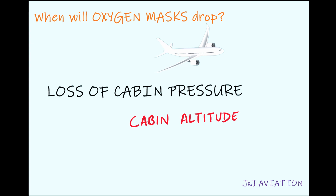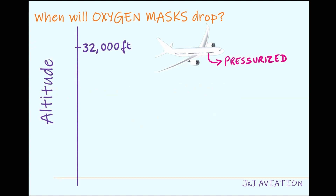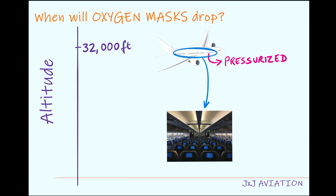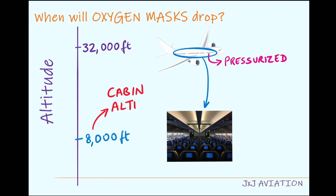What is cabin altitude? We saw that the aircraft cabin is pressurized when the aircraft is flying at very high altitudes. The pressure inside the aircraft's cabin will be the same as the pressure at a lower altitude of approximately 8,000 feet. This 8,000 feet is called the cabin altitude.